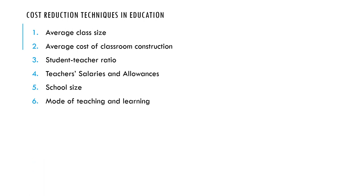Then we have the mode of teaching and learning. This is a newer approach that can help really reduce costs. If you consider school assets and the mode of teaching and learning together, you can achieve more. One way is to encourage e-learning, which could be through home studies. Some students will be able to learn online — encourage that. When you do, it means you will build fewer classrooms and need fewer instructors.